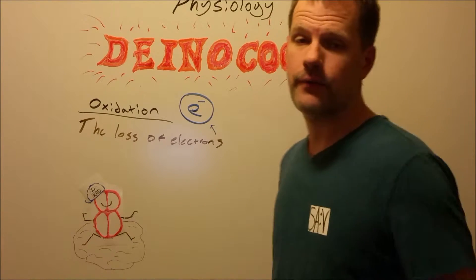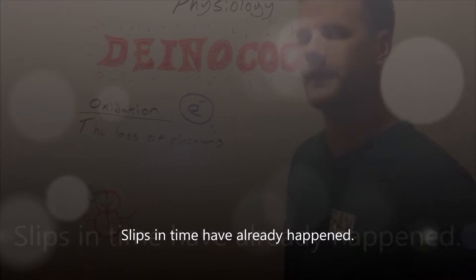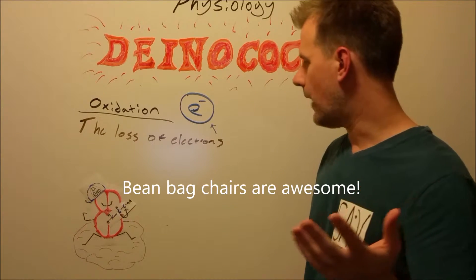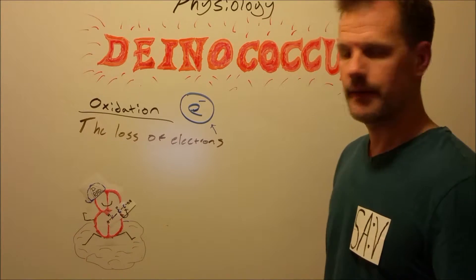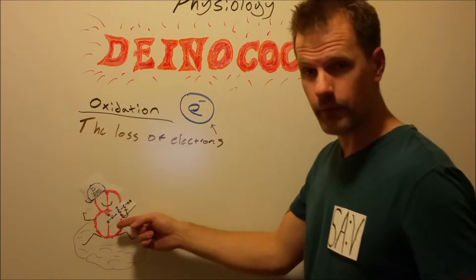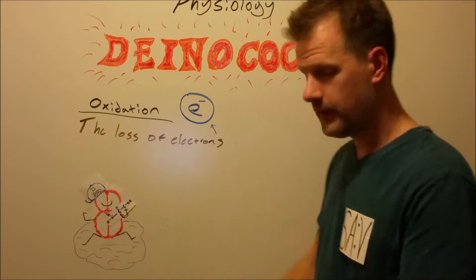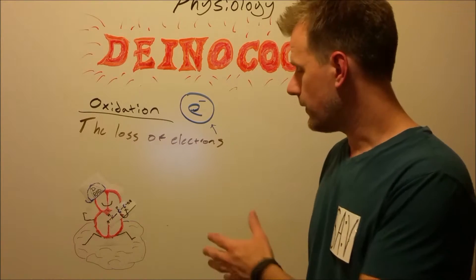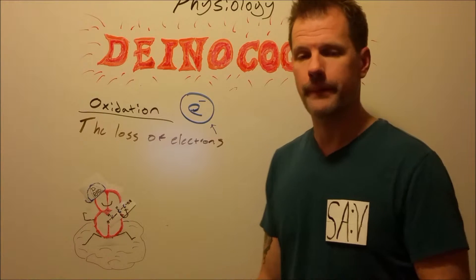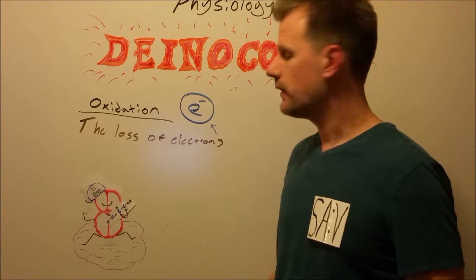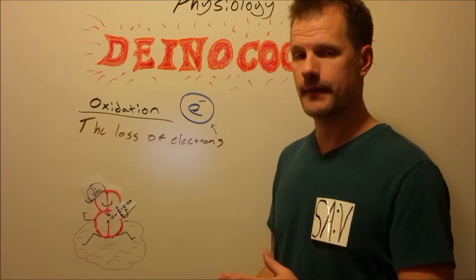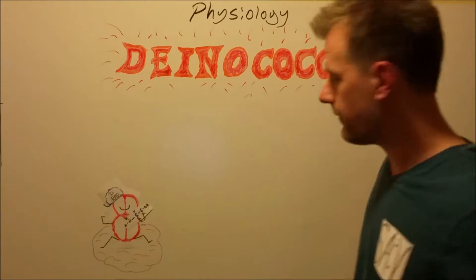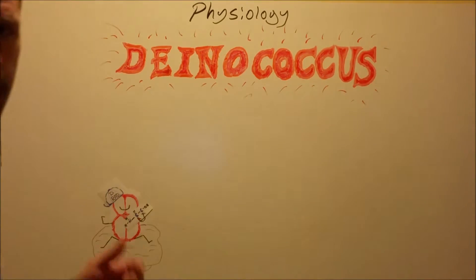What separates DRAD from a lot of other organisms is he's able to protect his proteins against oxidation. So how exactly is it that DRAD is able to hold on to his protein? That's a little protein right there, amino acid, R group C. It has to do with the cell structure. I'm going to break down the five layers that compose DRAD cell structure. The first layer is the cytoplasmic membrane.